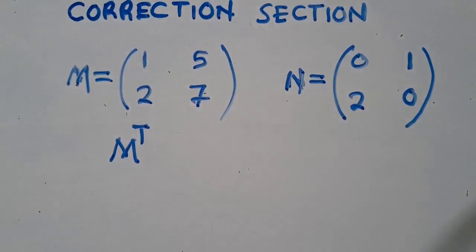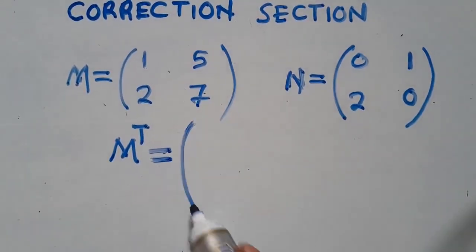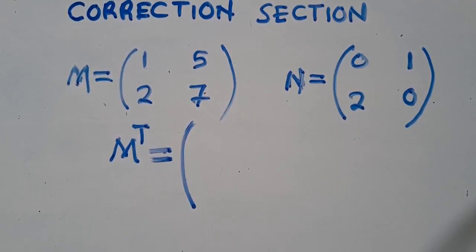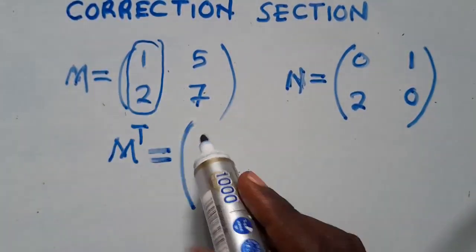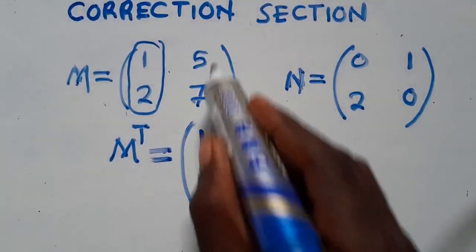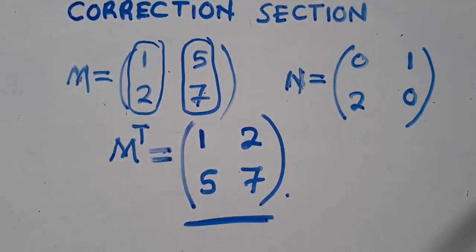We all agreed that M to the power T — whenever a matrix is raised to the power T — it means you are told to find the transpose of that particular matrix. So we want to find the transpose of matrix M. The transpose of matrix M is where the row changes. This is a column; the column changes to a row. So this one becomes 1, 2. This other column becomes a row: 5, 2. On that one I'm facing no challenges. We are all able to answer that — each and every one of you.